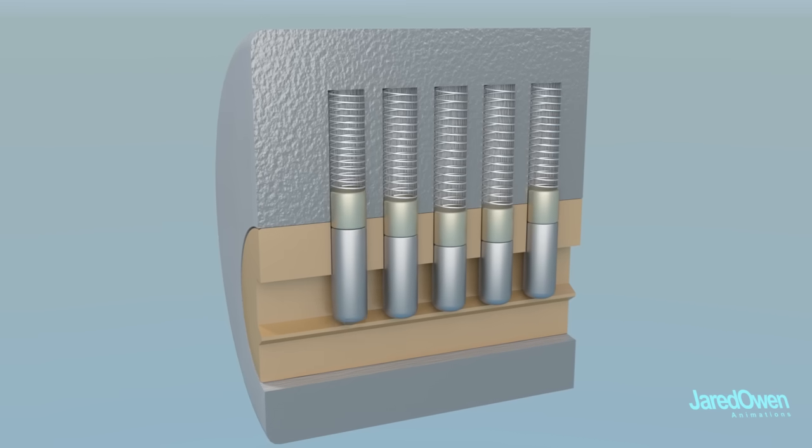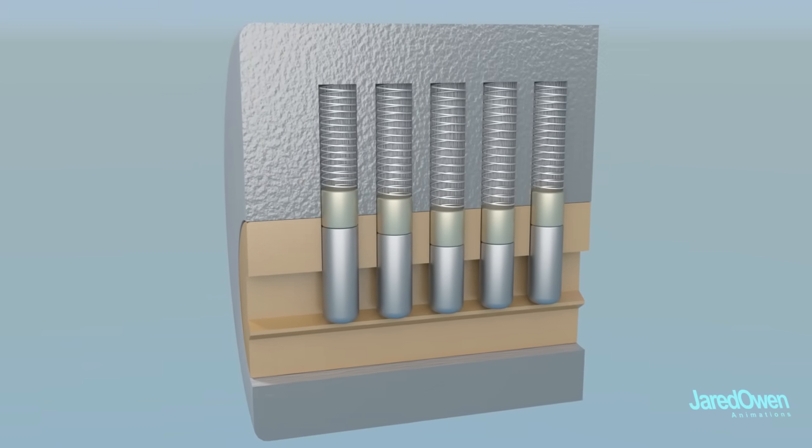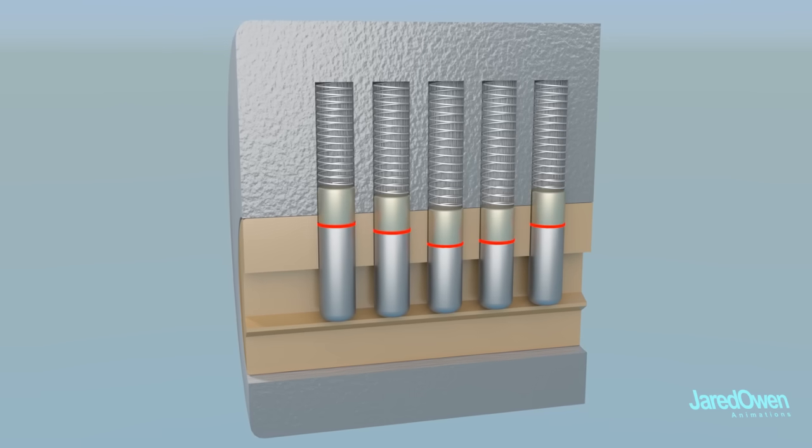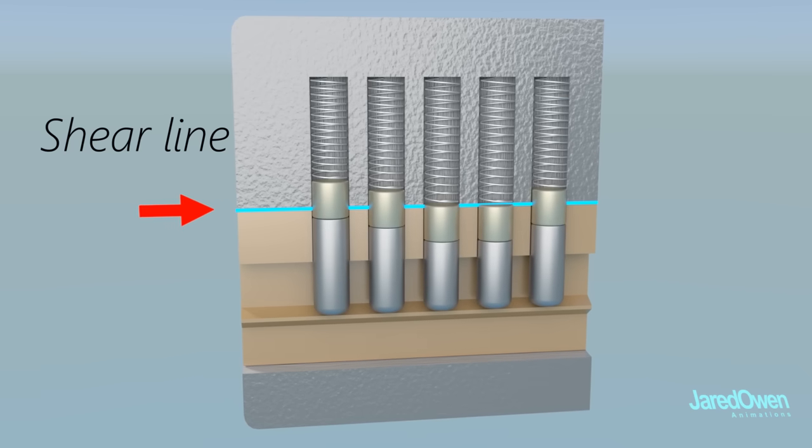The springs press all the pins down so that they all rest on this ledge. You'll notice that the pins meet at a different level for each shaft. For the plug to turn, the pins must line up with the shear line.